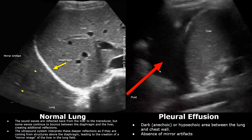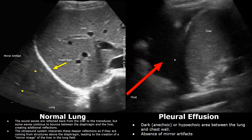This is another case of pleural effusion. Hypoechoic fluid is present in this case, and here a part of the lung is also visible inside the pleural cavity. There is absence of mirror artifacts above the diaphragm. This is the diaphragm and this is the pleural effusion.